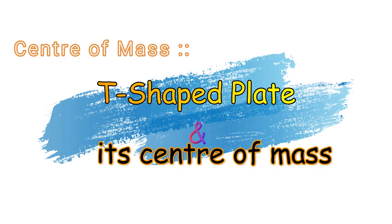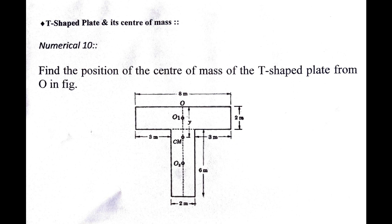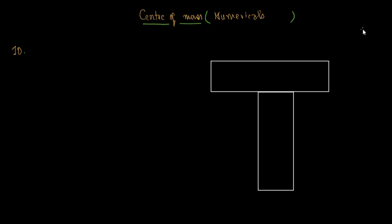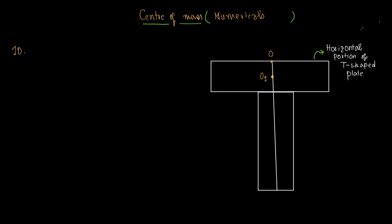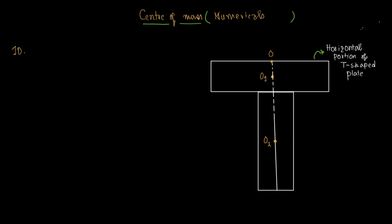We need to find the position of center of mass of the T-shaped plate from the origin O. This is numerical number 10 of the chapter on center of mass. O is the highest point of the T-shaped plate. O1 is the center of mass of the horizontal portion, and O2 is the center of mass of the vertical portion of the T-shaped plate.